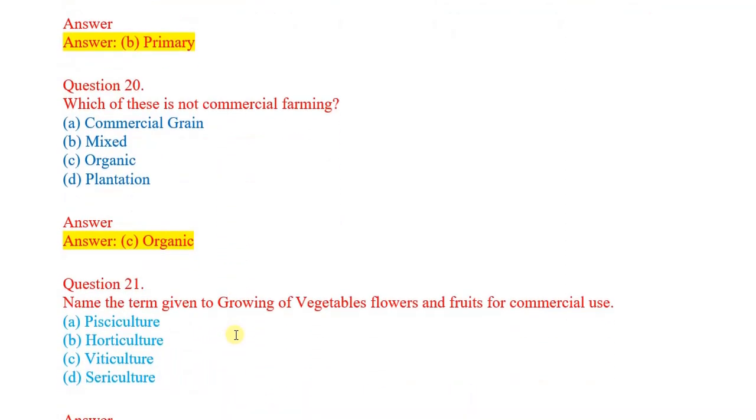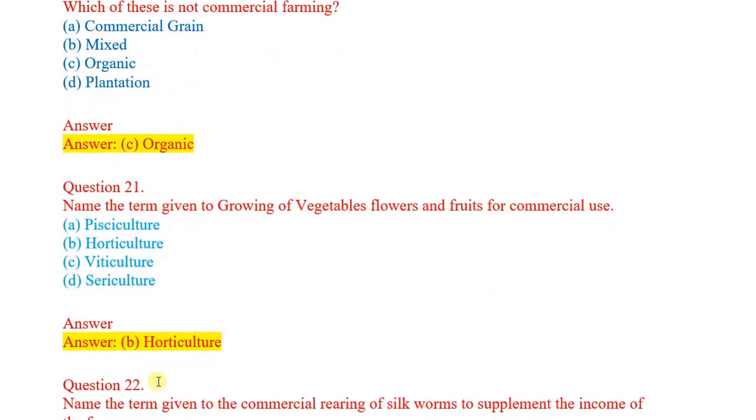Question number 21: Name the term given to growing of vegetables, flowers and fruits for commercial use. Options: pisciculture, horticulture, viticulture, sericulture. Correct answer: horticulture.